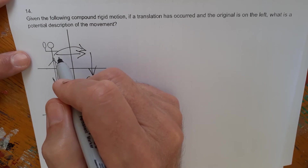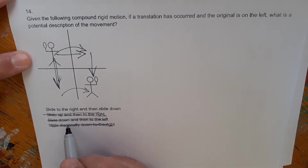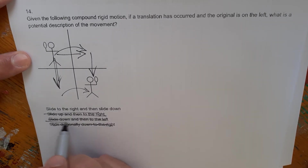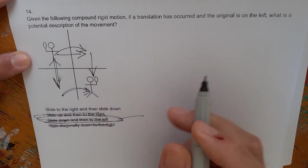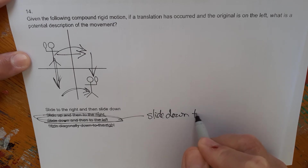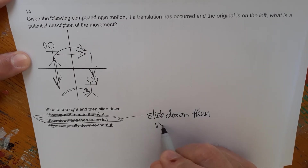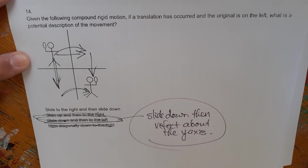After considering the translation options for the compound motion, the best answer is: slide down first, then reflect about the y-axis. That's the sequence that best describes the compound rigid motion shown. The problem set will be corrected if needed before students access it.